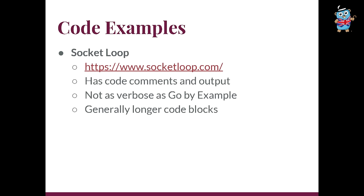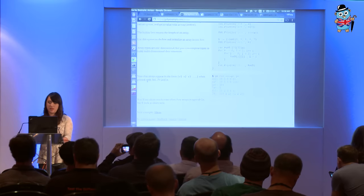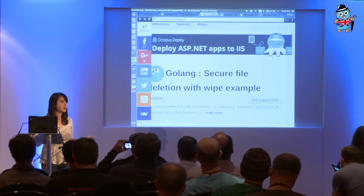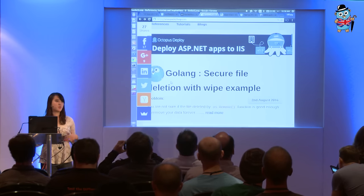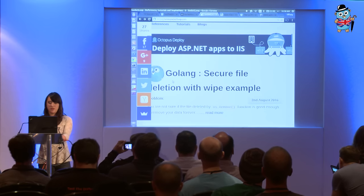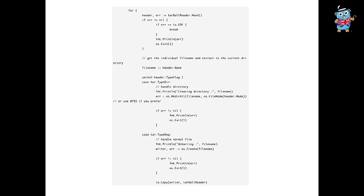Another one I came across is Socket Loop. I found this when I was trying to figure out: how do I untar a file? When you're in a terminal it's really easy — you just have one command, untar your file, all done. But in Go there are a lot more steps: you have to open the file, do copies, et cetera. So I was like, I have no idea how to do this, there are way too many functions. On their website they have a bunch of different tutorials. Unlike Go by Example where it's like 'how do I do arrays,' this one is more specific to real tasks — for instance, secure file deletion with wipe example. And there are really long code blocks. I found that really useful.